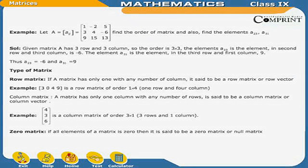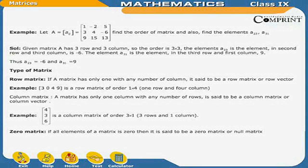For example, let A equals to Aij equals to the matrix with elements 1, minus 2, 5, 3, 4, minus 6, 9, 15, 13. Find the order of matrix and also find the elements A23 and A31. The given matrix has 3 rows and 3 columns, so the order is 3 by 3. The element A23 is the element in the second row and third column, i.e., minus 6. The element A31 is the element in the third row and first column, i.e., 9. Thus, A23 is minus 6 and A31 is 9.